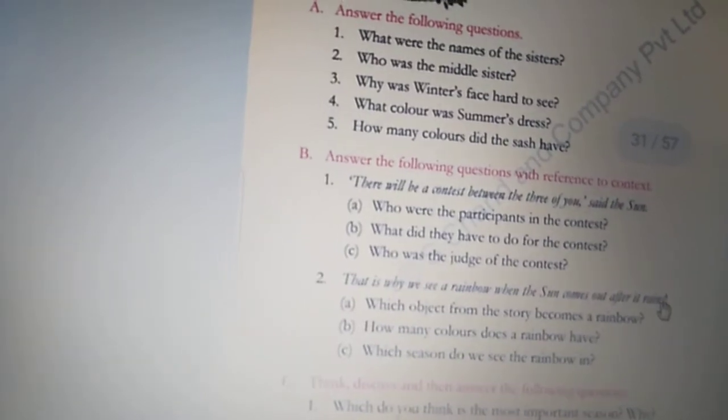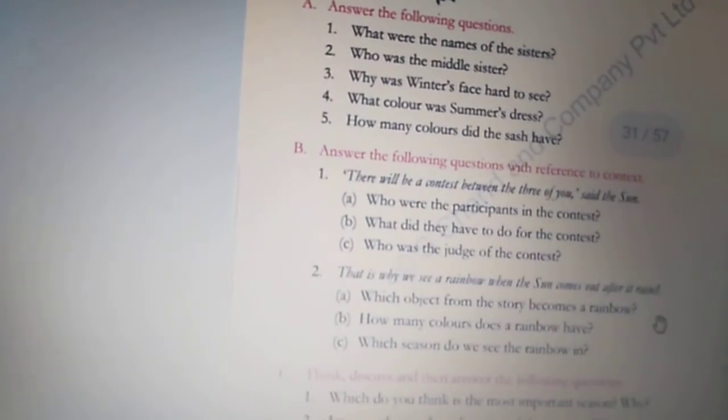Who was the judge of the contest? Contest ka judge kaun tha? The sun was the judge of the contest. Sooraj contest ka judge tha. Next line which they have taken is, that is why we see a rainbow when the sun comes out after it rains. Jab barish ke baad suraj nikalta hai, tabhi hum rainbow dekhte hai.